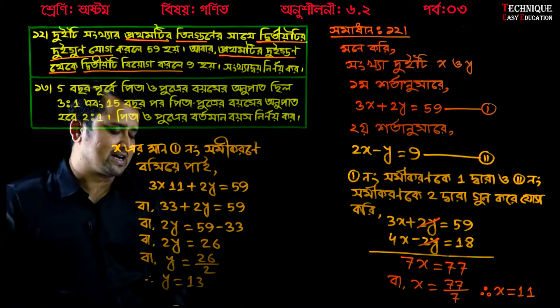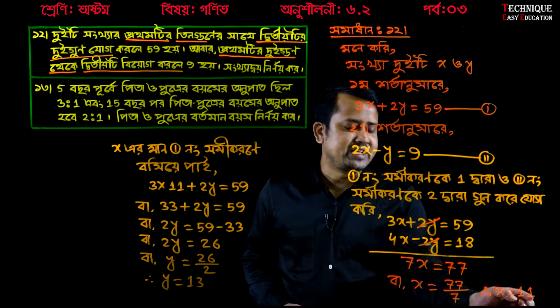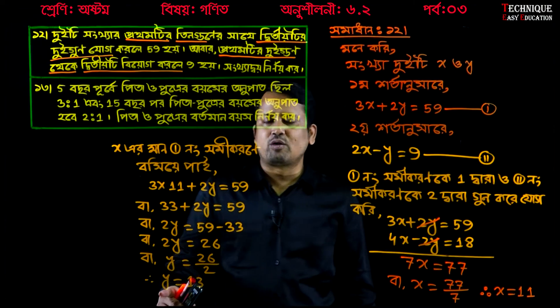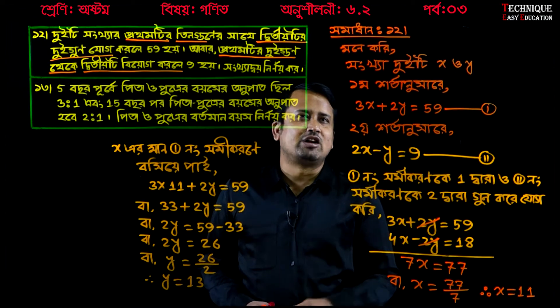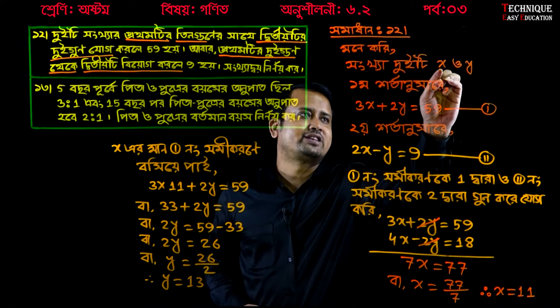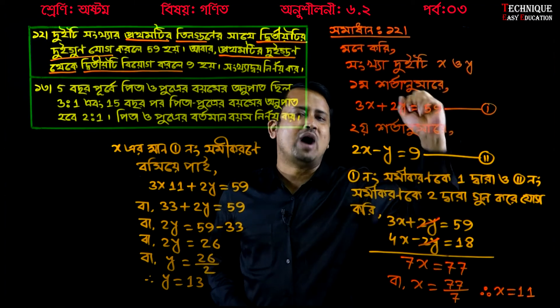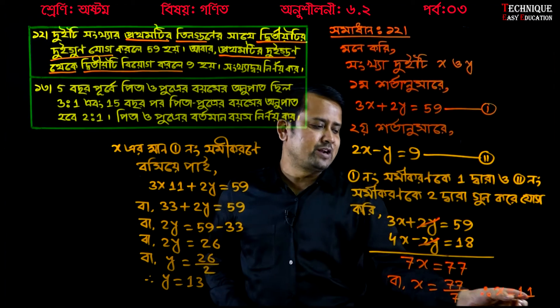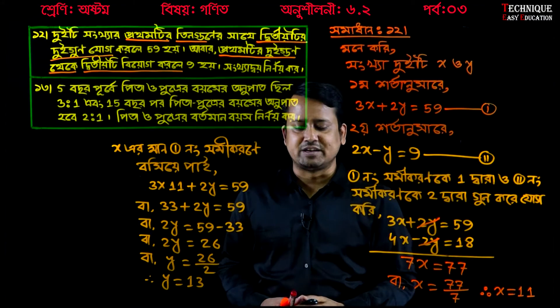Look, having calculated, y equals 13. So our x equals 11 and our y equals 13. Therefore, x equals 11 and y equals 13. So our two numbers: x equals 11 and y equals 13.